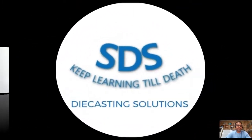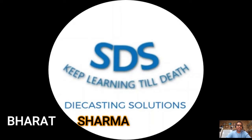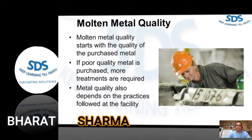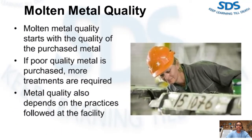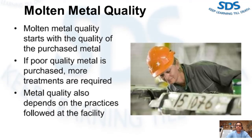Welcome to Study Die Casting Solutions. My name is Bharat Sharma and today we talk about molten metal quality. Molten metal quality starts with the quality of the purchased metal. If poor quality metal is purchased, more treatment will have to be done to improve the quality. Metal quality also depends on the practices followed at the facilities. If high quality metal is purchased but is not handled properly, the result is the same: poor casting.